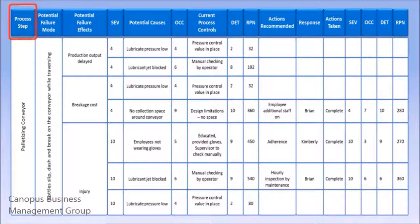The first column on the extreme left is where the process step is mentioned. This activity is done for each process step.